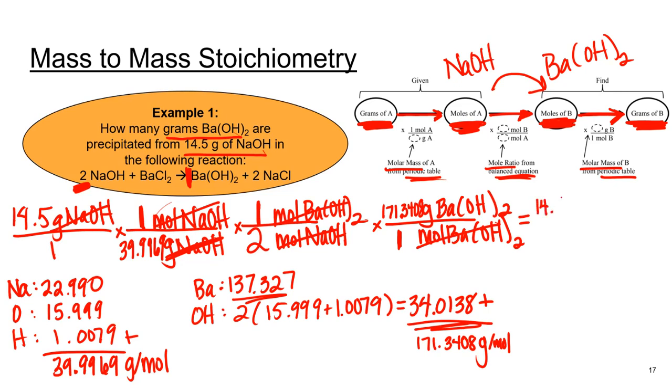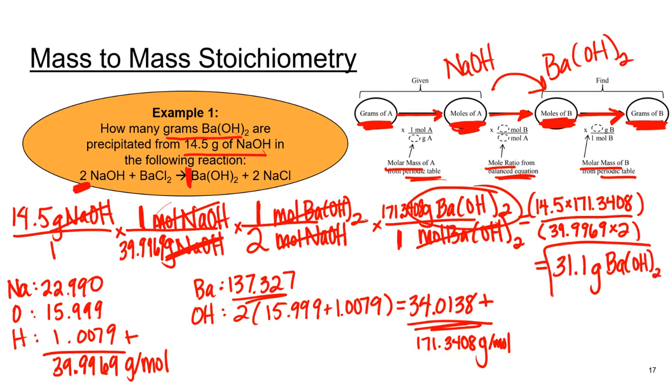Now I'm just going to multiply everything in the numerator and divide by everything in the denominator. That denominator really needs parentheses if you're going to do this calculation all at once. Lots of people like to put in the numerator too, just to be sure. And you should get 31.1 grams of barium hydroxide are produced.